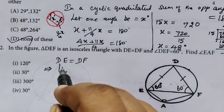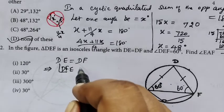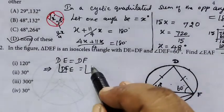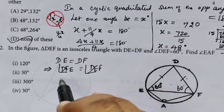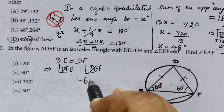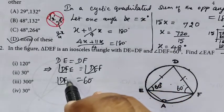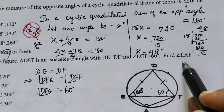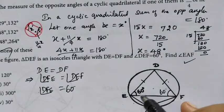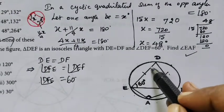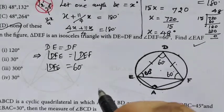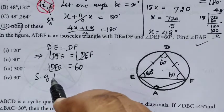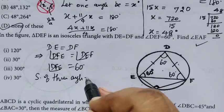Angle DFE equals angle DEF, since these are the opposite angles to the equal sides. We know the sum of the three angles of a triangle equals 180 degrees.